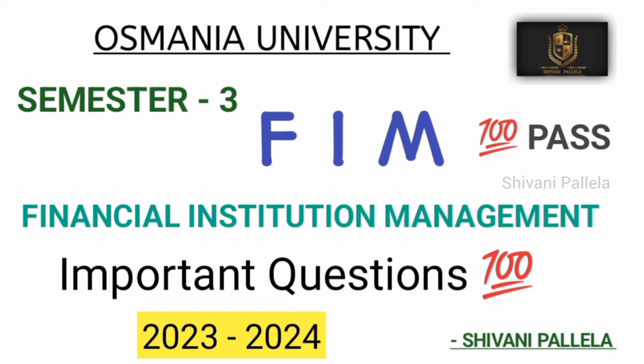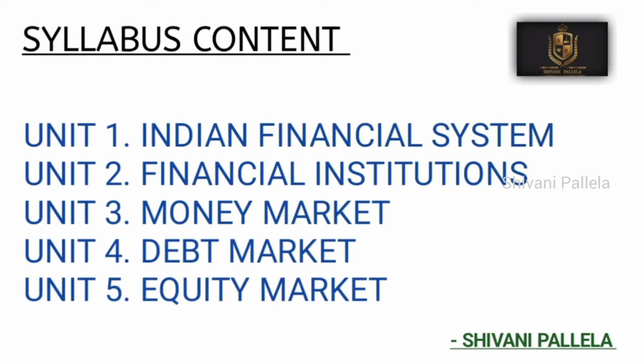First we will discuss about the syllabus content. In total you will have five units: the first unit is Indian Financial Market System, the second is Financial Institutions, the third unit is Money Market, the fourth unit is Debt Market, and the fifth unit is Equity Market. Check out whether this syllabus is for Osmania University or any other university — if you are from Kakatiya or Palamuru University and the syllabus content is the same, you can absolutely follow these important questions.